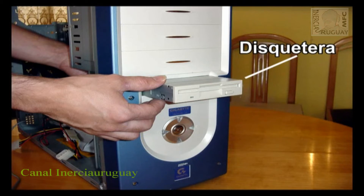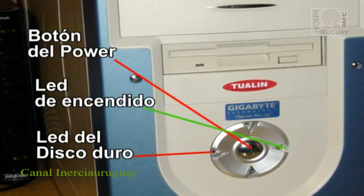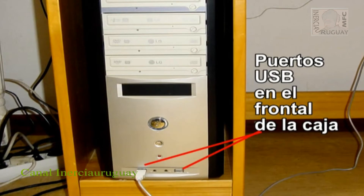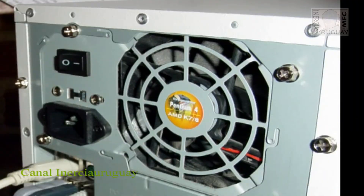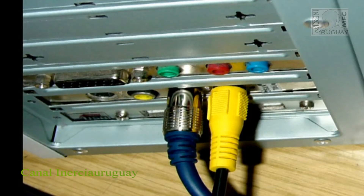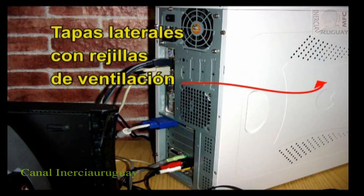B. Una parte frontal que incluye la entrada de la disquetera, las partes frontales de las unidades de CD-ROM y DVD-ROM o cualquier dispositivo de 5¼ pulgadas. El panel frontal con el botón de encendido o power y los LED de encendido del disco duro, etc. Según el modelo, también podemos apreciar en la parte frontal de la caja algunos puertos USB. En la parte posterior de la caja podemos apreciar, de arriba a abajo: 1. Una gran ventana donde se ve la parte posterior de la fuente de alimentación. 2. Los puertos integrados en la placa base. 3. Los puertos de las tarjetas de expansión utilizadas. 4. Chapitas troqueladas para los slots de expansión. 5. Rejilla del ventilador. Finalmente, la caja o carcasa lleva unas tapas con orificios para la ventilación.